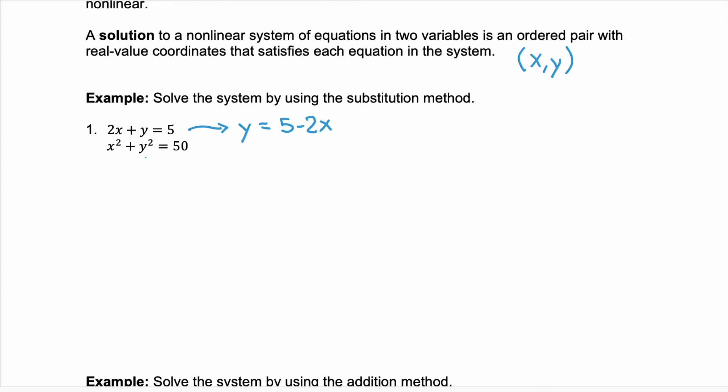You do that and you can substitute it into the second equation for y. We'll have x squared plus 5 minus 2x squared equals 50. We're going to multiply that binomial. Notice that it's a perfect square. So we have x squared plus 25 minus 20x plus 4x squared equals 50.